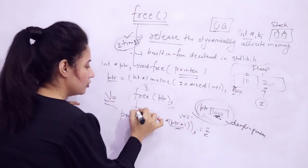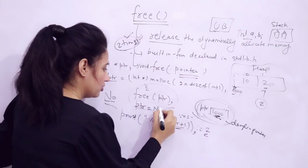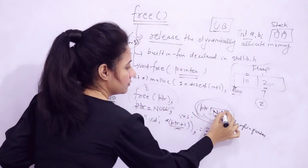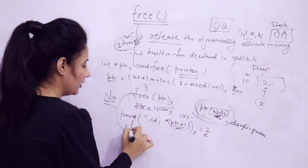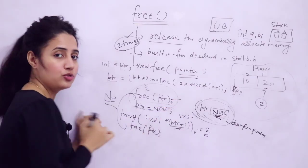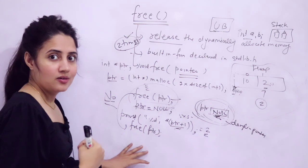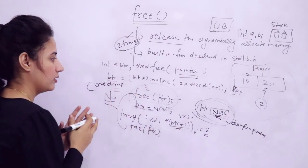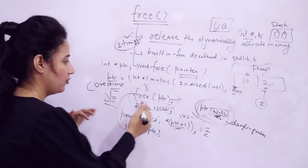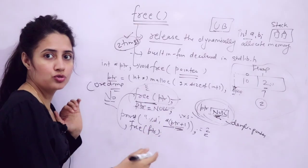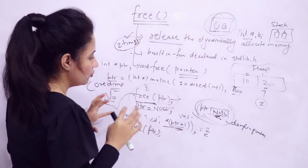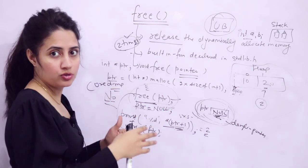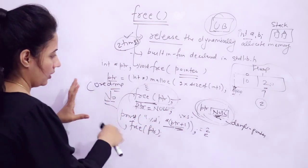After using free, the simplest and best thing to do is assign ptr = NULL, so ptr now holds null. Also, be careful about double free — if you call free on the same pointer twice, you can get a core dump error or double free error. And if you try to dereference the freed pointer, you may get a segmentation fault. So always use the free function carefully.